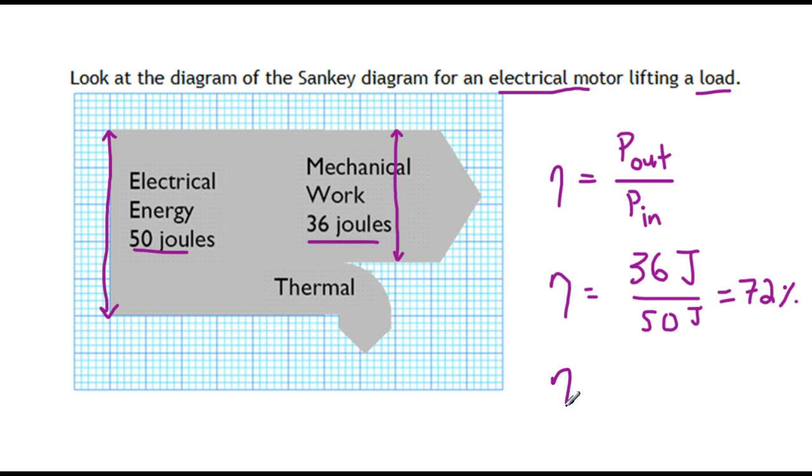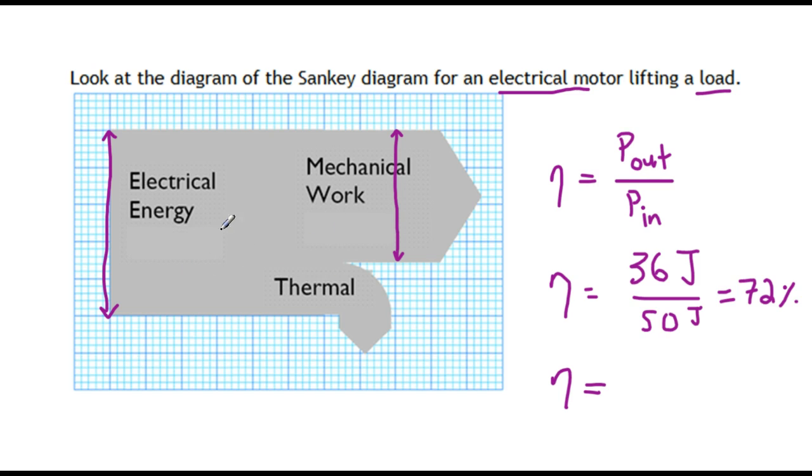But there's a second way to do this calculation. What if they didn't give us this 36 joules or the 50 joules? What if that information was not there? Even without that info, you can still calculate the efficiency, because they've given us a grid in the back.